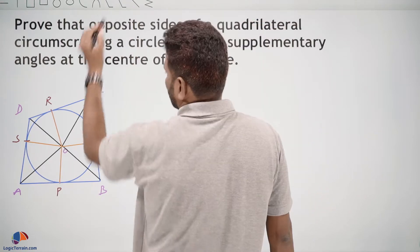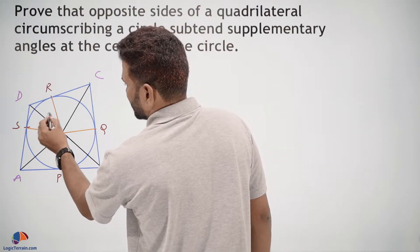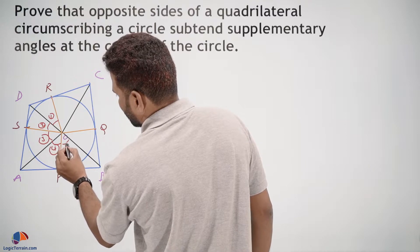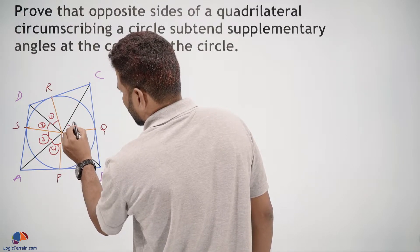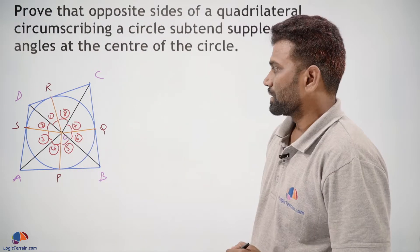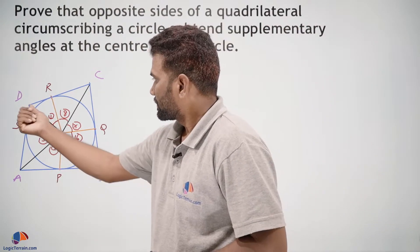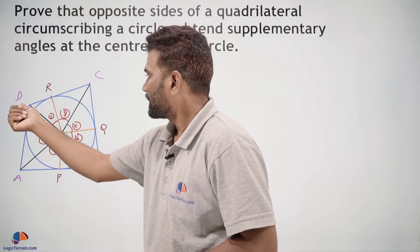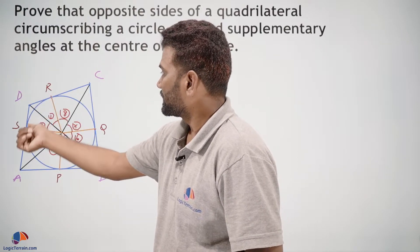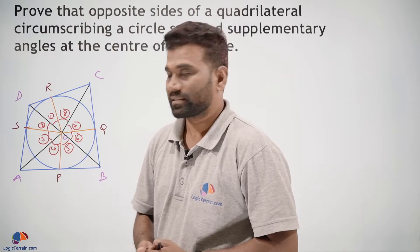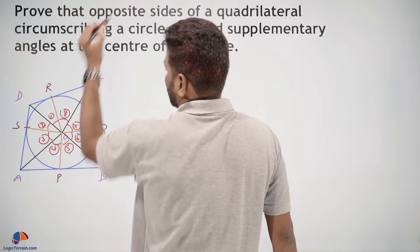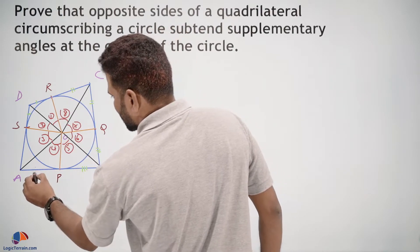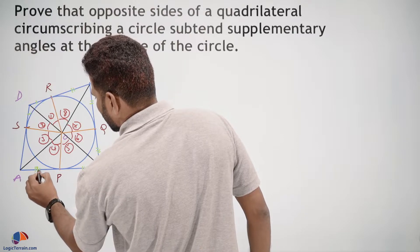Now name these angles: this is angle 1, angle 2, angle 3, angle 4, angle 5, angle 6, angle 7, angle 8. Here D is an external point and from this external point, DR and DS are touching the circle at two points, so these two are tangents. Similarly the others are tangents from their respective external points — each pair of tangent lengths from an external point are equal.